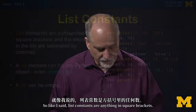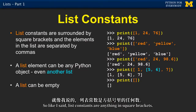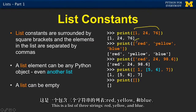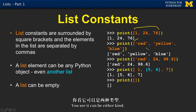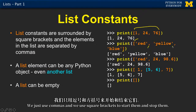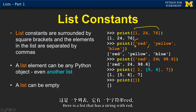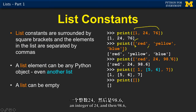List constants are anything in square brackets. That's a list of three integers: 1, 24, and 76. This is a list of three strings: red, yellow, and blue. It can be either kind — we use commas and square brackets to start and stop them. You do not have to have the same type of data in a list. Here is a list that has a string 'red,' an integer 24, and 98.6, which is a floating point number.